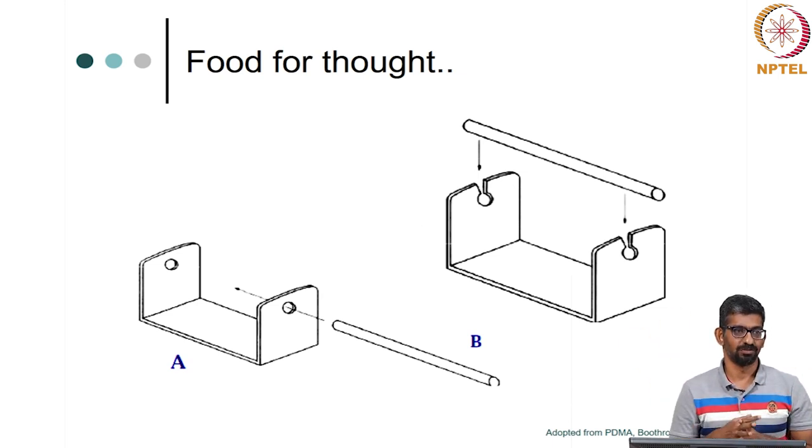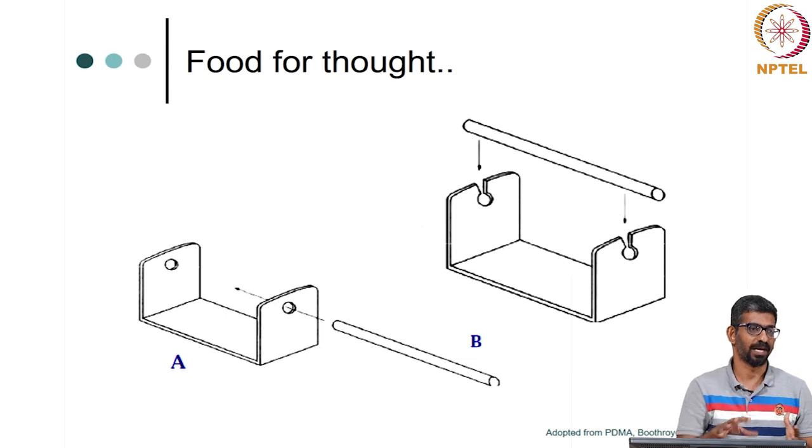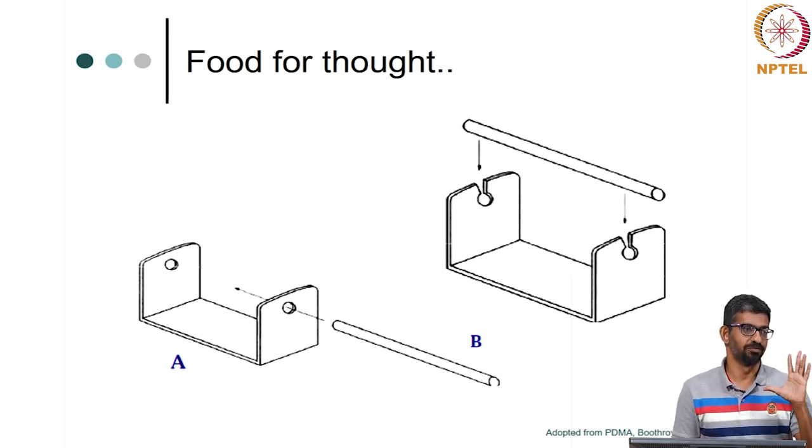Currently it is a software. You go and choose that thing, it will automatically tell you what the time is, but this is what goes in the back end of that particular software. You might be able to change or moderate those values a little bit. Finally, it will give you an assembly efficiency - one particular number or a metric that you are looking at.